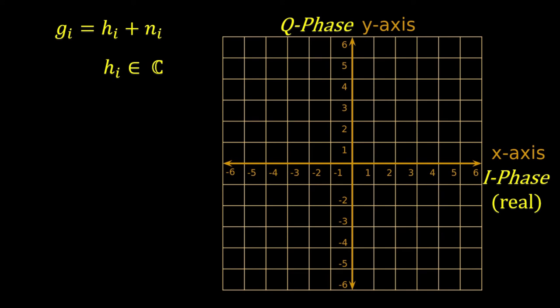Now, since there is no dominant path or line of sight between the transmitter and the receiver, the received signal is equally likely to be in any of the quadrants. That is, from one path we may have this signal while from the other path we may have this signal and so on.